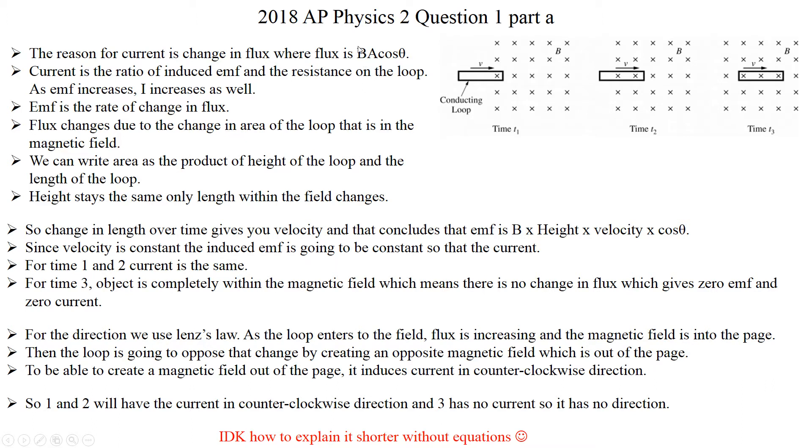So my flux is basically b times height or length times delta x, because x is changing. And since EMF is flux over time, then b times height times distance over time. And from here we can write, so change in length over time gives you the velocity, and that concludes that EMF is b times height times velocity times cosine theta. And cosine theta is going to be 1, because they're going to be parallel in that case.